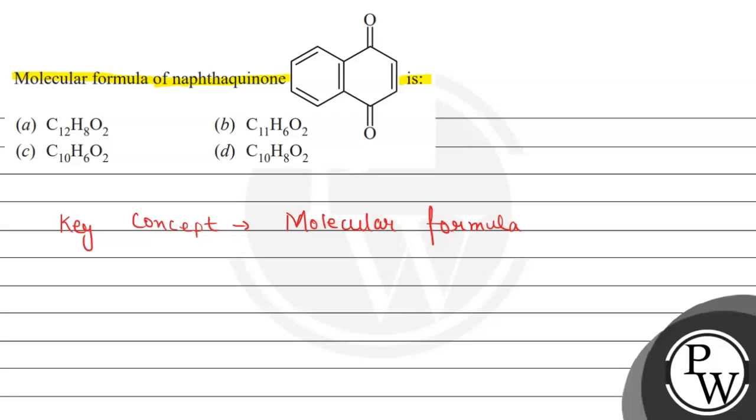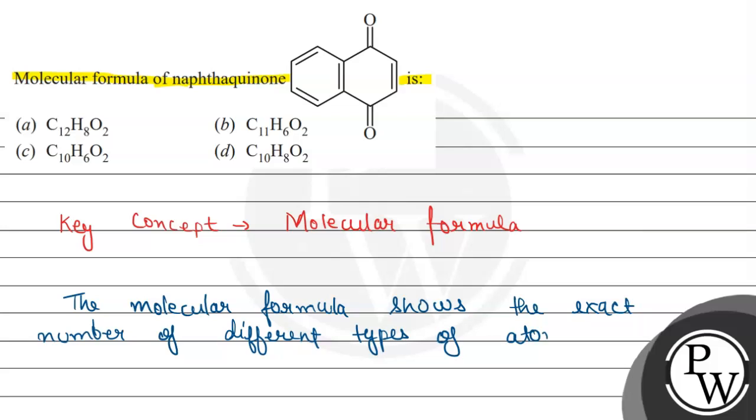So, let us see what is molecular formula. The molecular formula shows the exact number of different types of atoms present in a molecule of a compound.